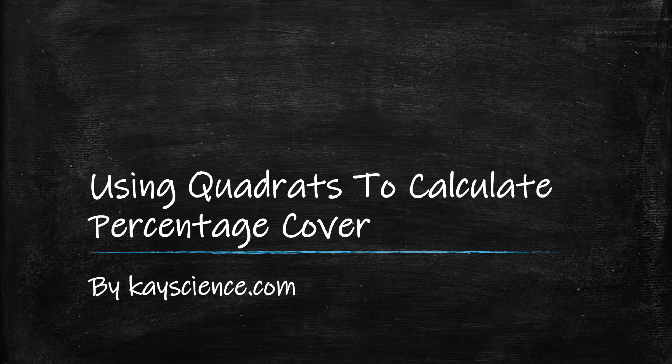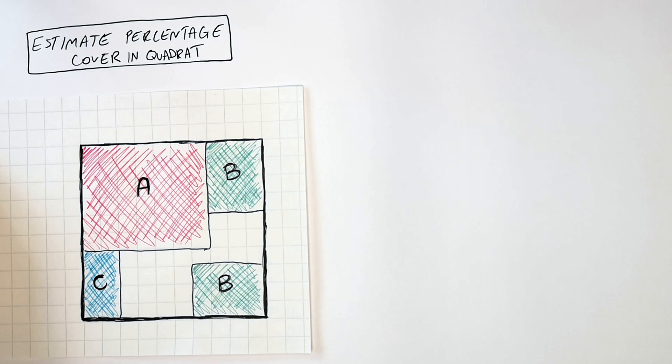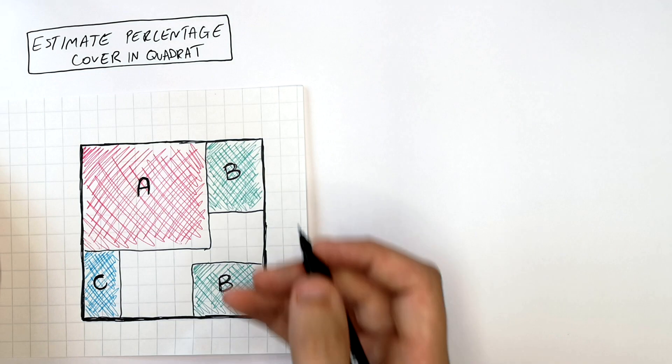Using quadrats to calculate percentage cover by kscience.com. You can estimate the percentage cover within a quadrat. So if a quadrat has 100 squares in it, each square represents 1% percentage cover within the quadrat.